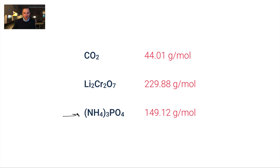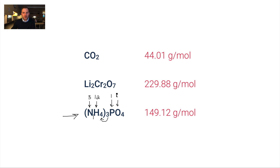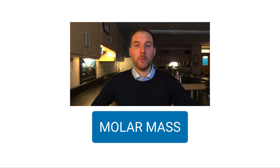The trickiest one is (NH4)3PO4. If you haven't tried it, pause and do it now. There are three ammonium ions, so we take 3 times 1 nitrogen = three nitrogens, and 3 times 4 = twelve hydrogens. Don't add and say seven hydrogens — distribute correctly. There is one phosphorus and four oxygens. Multiplying each by their molar masses from the periodic table gives 149.12 grams per mole.